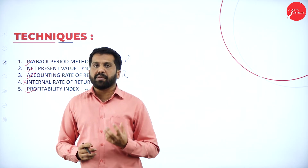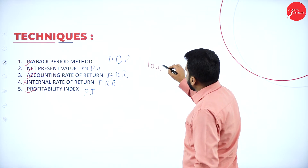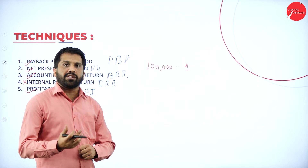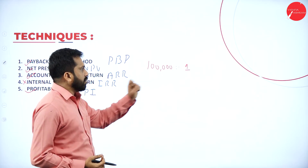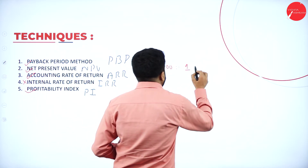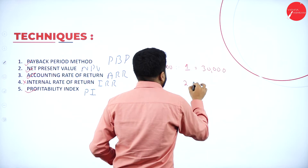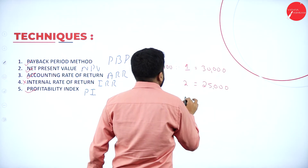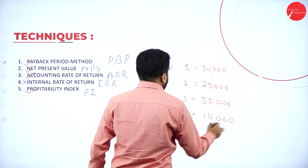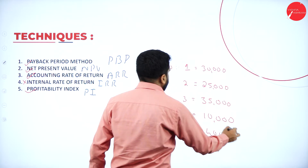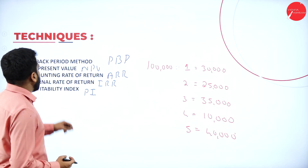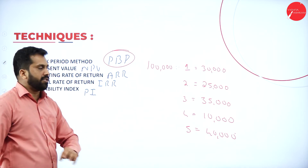We'll understand what is payback period — very simple. Your investment is 1 lakh. For example, you invested 1 lakh and purchased an auto. Your investment is 1 lakh. In the auto, first year income is 30,000; second year income is 25,000; third year income is 35,000; fourth year income is 10,000; fifth year income is 40,000. These are the incomes generated from your auto. Now how to find out the payback period?